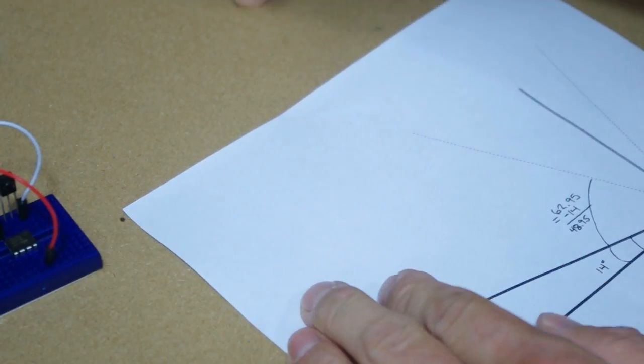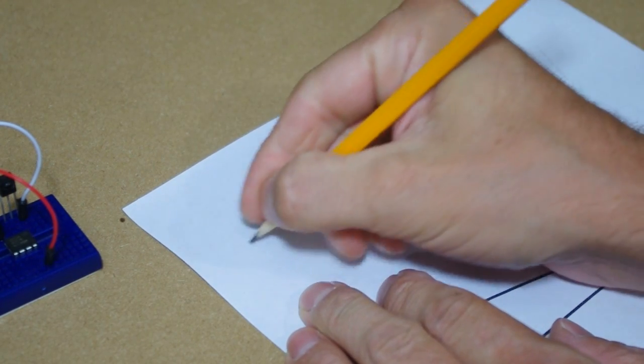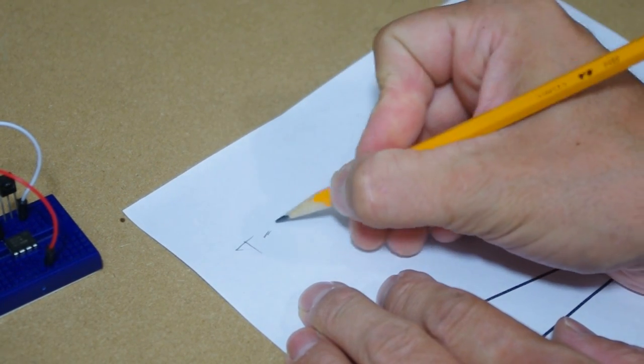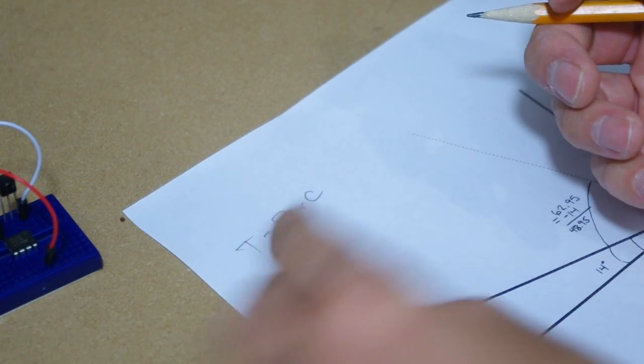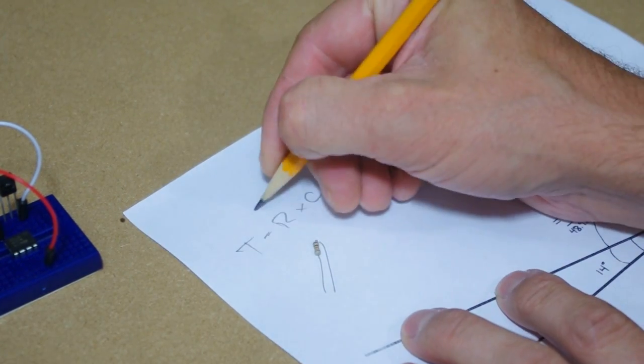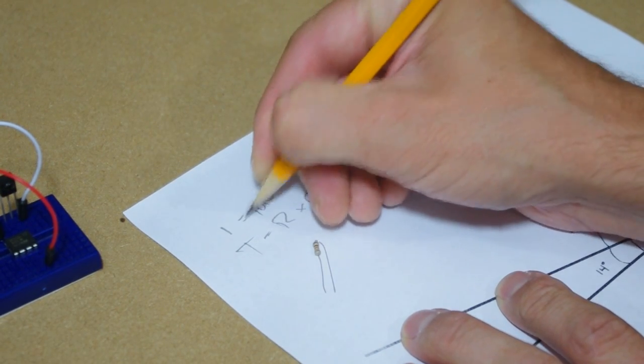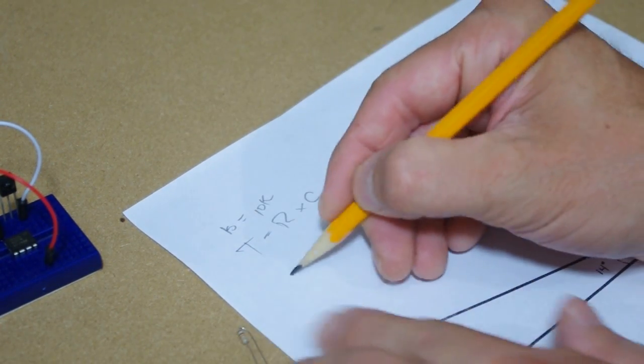Well, what is a time constant? A time constant is resistance times capacitance. In my case, I know that I want to use a 10k resistor. So if I have 10k and I want it to turn on for approximately one second...